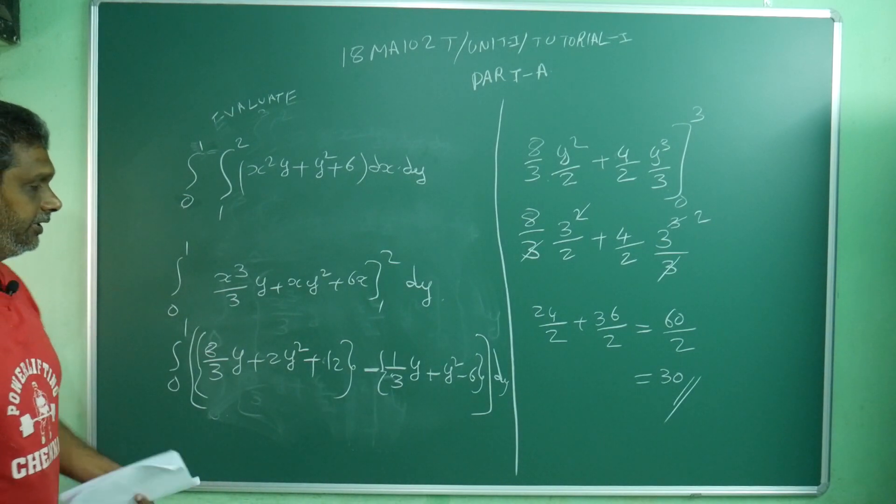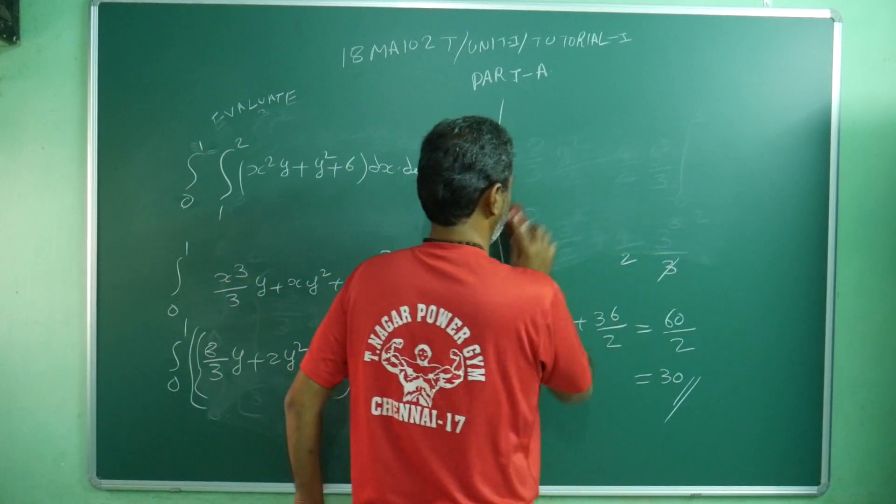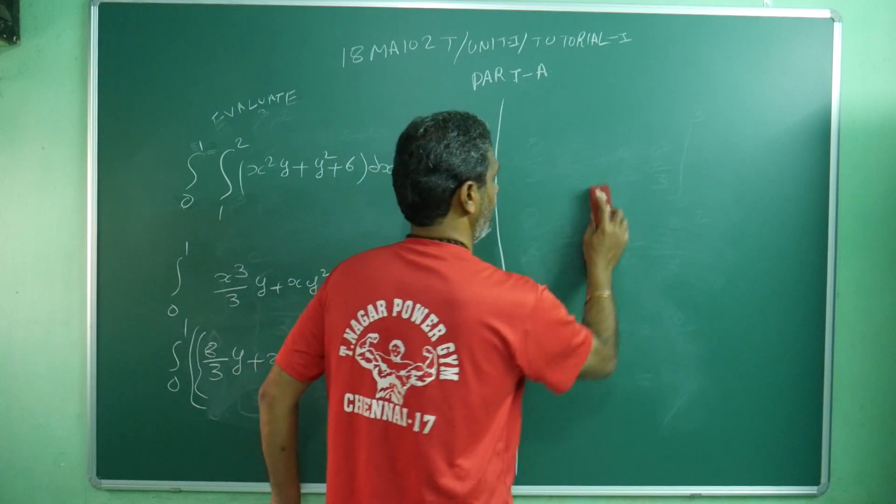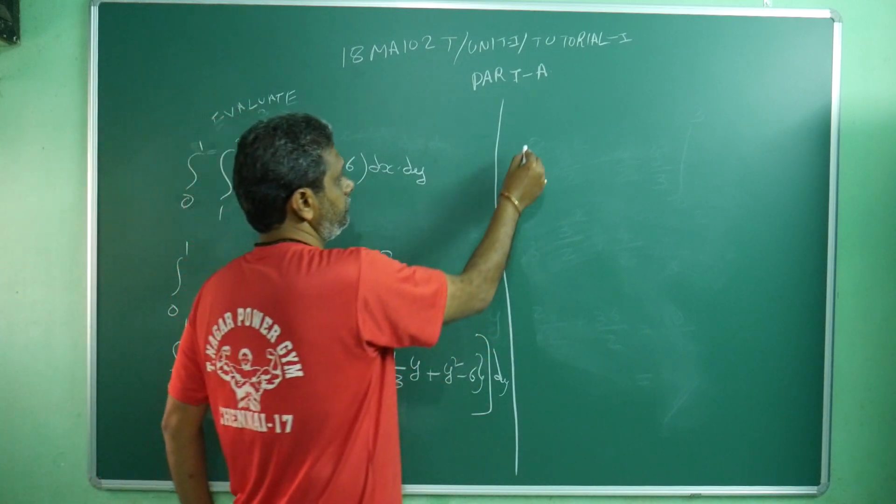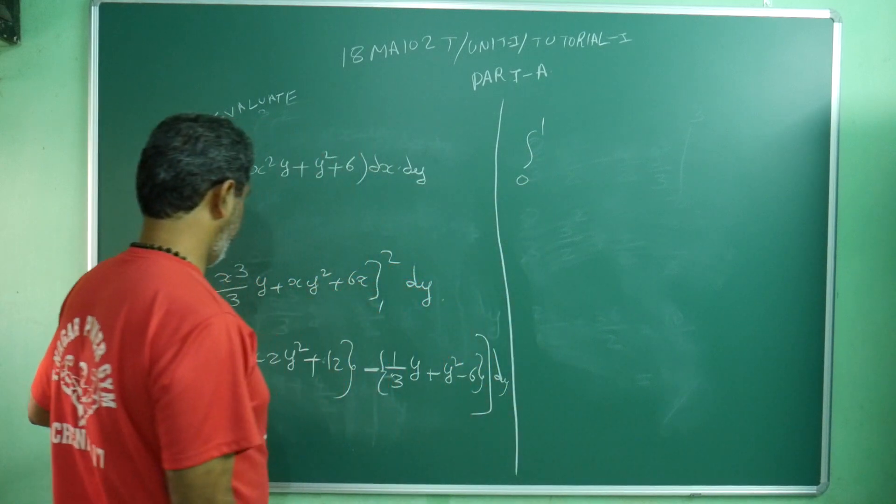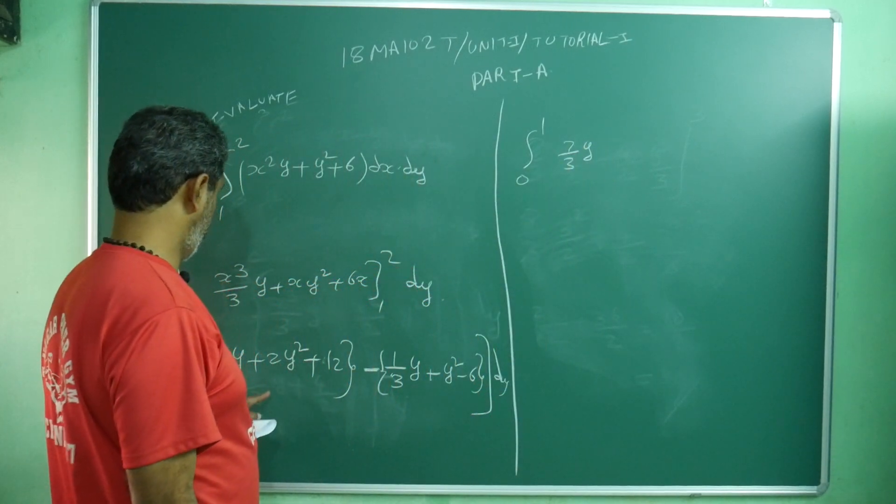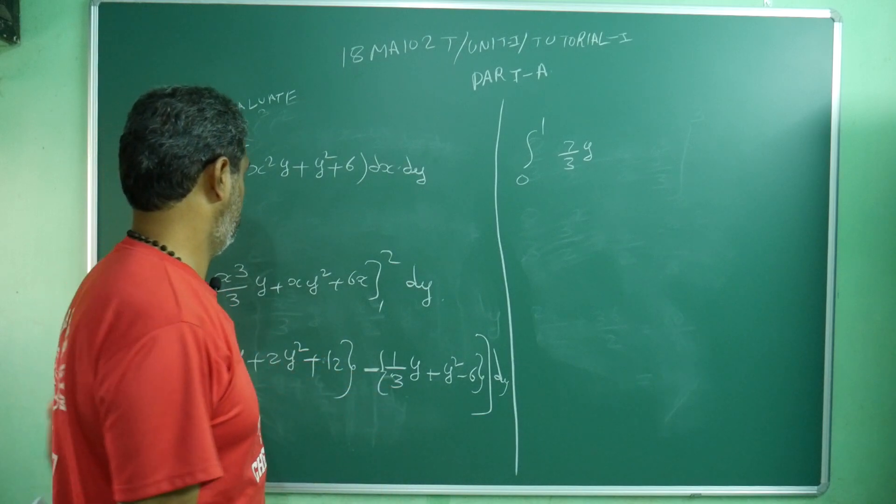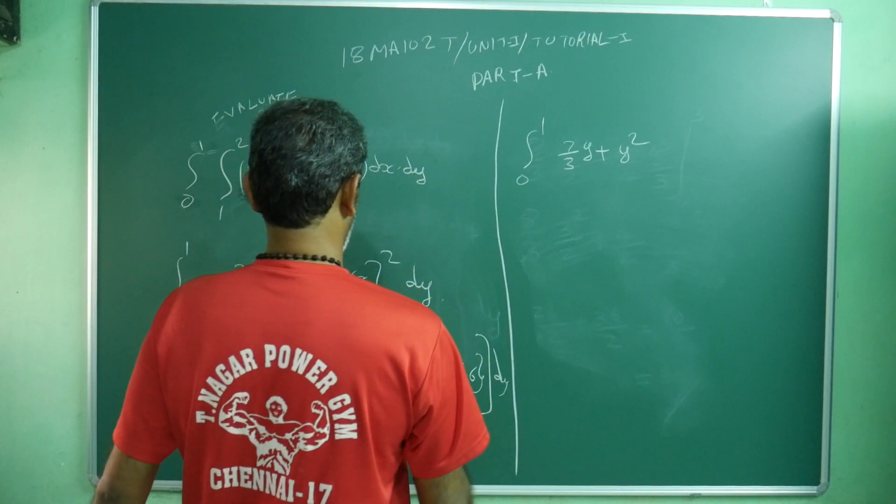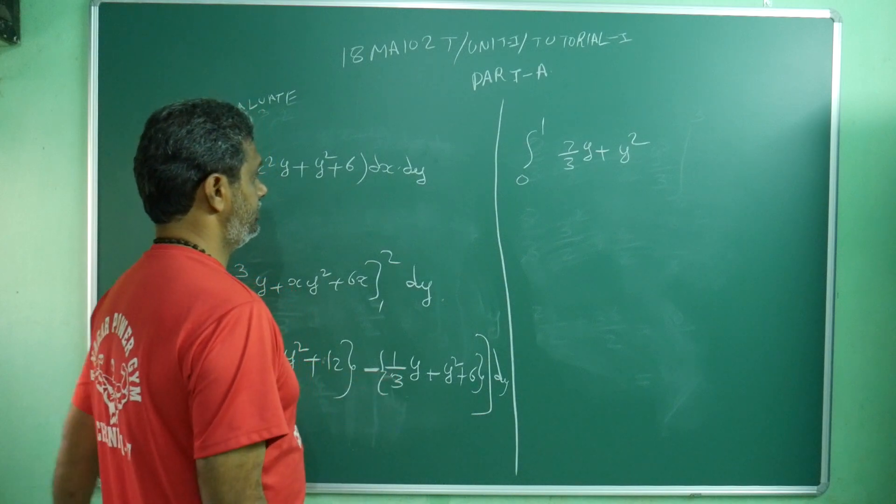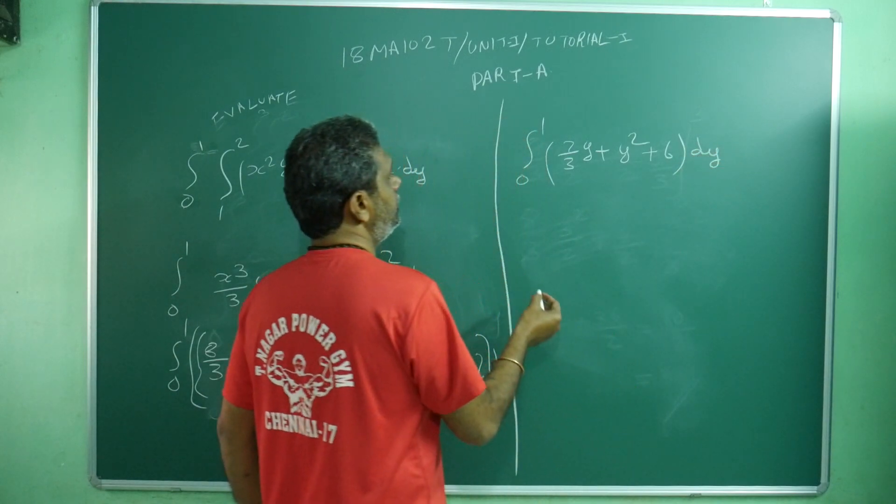Now simplify. 0 to 1. This is 8 by 3 minus 1 by 3, what you will get? 7 by 3. Then 2y squared minus y squared, I will get plus y squared. 12 sorry, this is plus 6. 12 minus 6 is 6 dy. Do integration again.